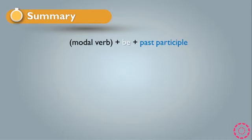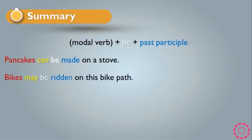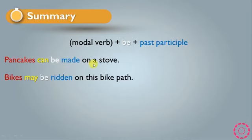Let's see the summary of this lesson. The brief rule of modal verbs in passive is: modal verb + be + past participle. For example, 'Pancakes can be made on a stove' and 'Bikes may be ridden on this bike path.' In both sentences, we have the object first — pancakes and bikes — then the modal verb — can and may — then 'be', and then the past participle — made or ridden. 'On a stove' and 'on this bike path' are the complements.